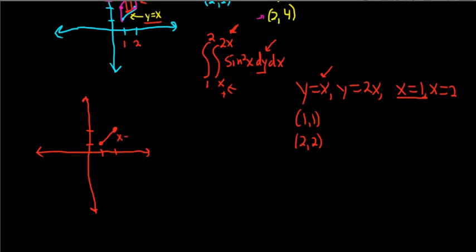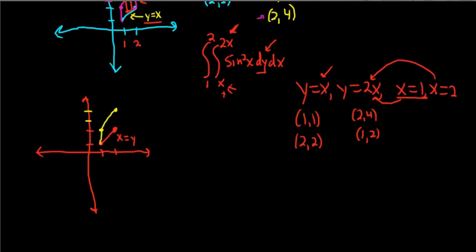For dx dy, we want to think of y equals x as x equals y, since we want functions of y. We also got the points (2, 4) and (1, 2) from the other function. If we do dx dy, something problematic happens — we need two integrals. Drawing a rectangle in the lower portion and one in the upper portion, you can see the edges are different. Over here the rightmost function is x equals 2, and over here the rightmost function is x equals y. So we need two separate integrals.